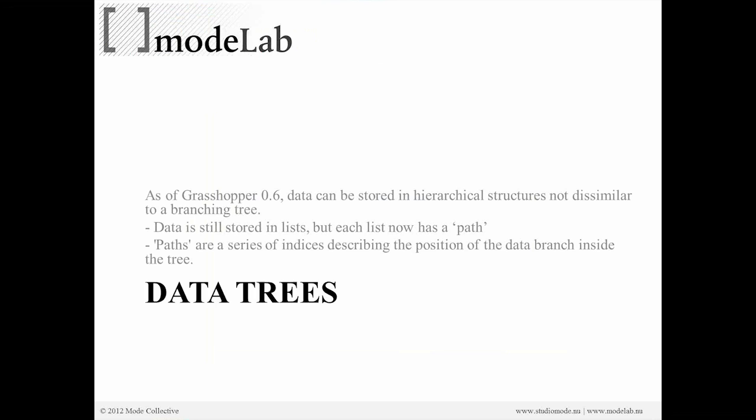For a while now, since version 0.6, data can be stored in hierarchical structures that can be thought of as a branching tree. The data passing through a data tree is still stored in a list, but now each list also has a path — that's how we access elements on that particular list. So now we can have lists of lists, and the paths are a series of indices describing the position of the data branch inside the tree.